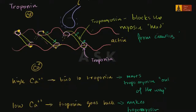So we're building up a picture of how muscles contract and how we can control that contraction. If we have a high calcium concentration within the cell, the muscle will contract. If the calcium concentration drops again, the myosin will be blocked, and the muscle will relax.